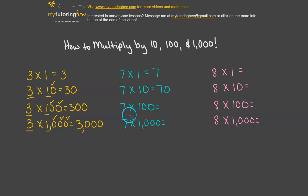7 times 100, 7 times 1 is 7. We've got the two 0s. So that gives us 700. And then 7 times 1,000, 7 times 1 again is 7 with the three 0s. So put in the 0s and then put in your commas. So we get 7,000.